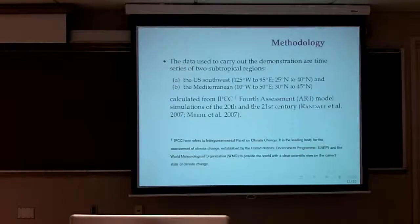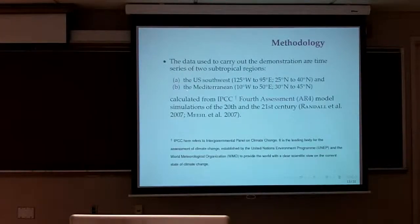We're taking data. Data to carry out this experiment is from two subtropical regions, the U.S. southwest and the Mediterranean. These are calculated from the IPCC fourth assessment model simulations of the 20th and 21st century. And you have here the reference to things. Now, this problem was actually studied. The drought or the change in climate was studied in a paper by Seeger et al. in 2007, which appeared in the Journal of Science.